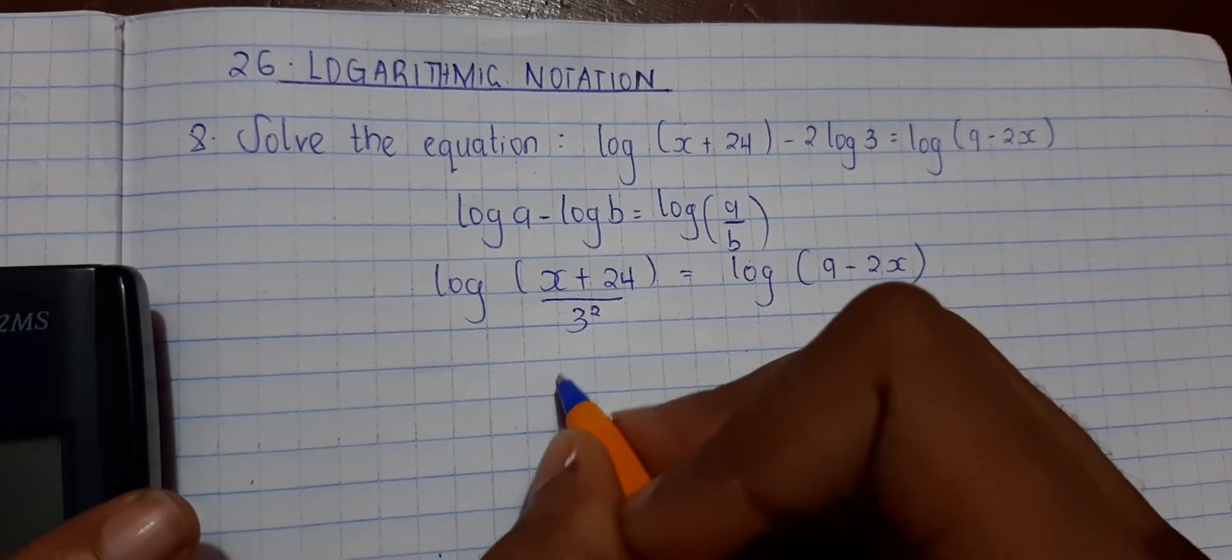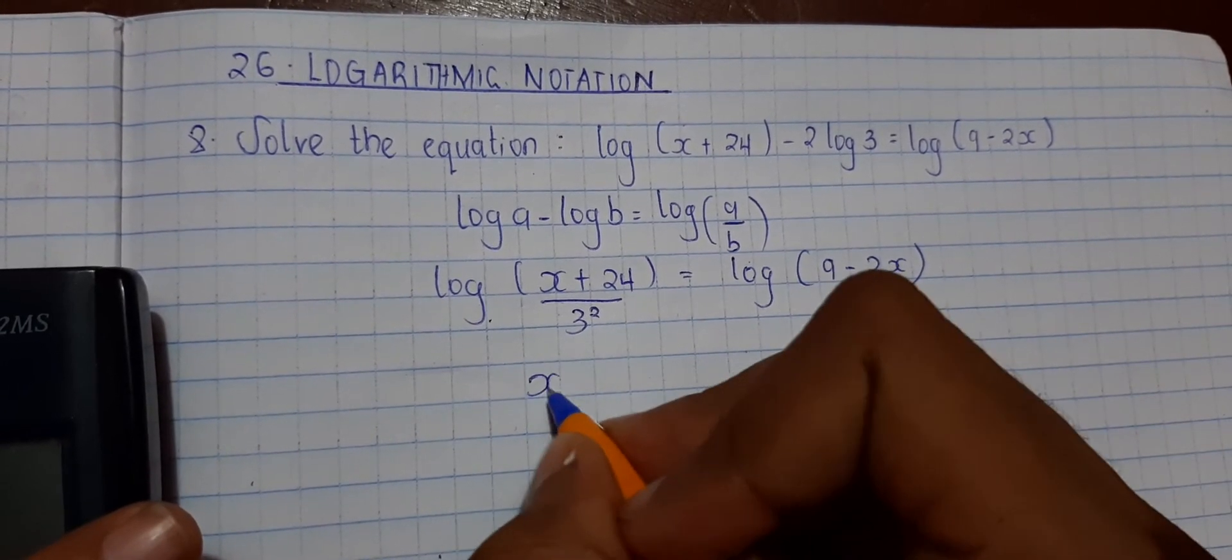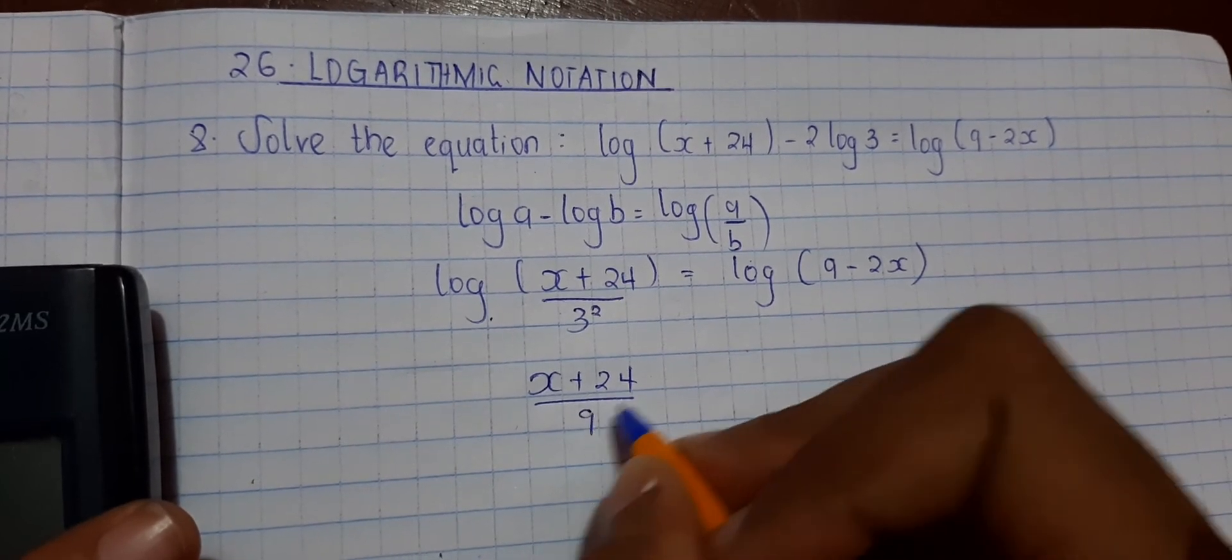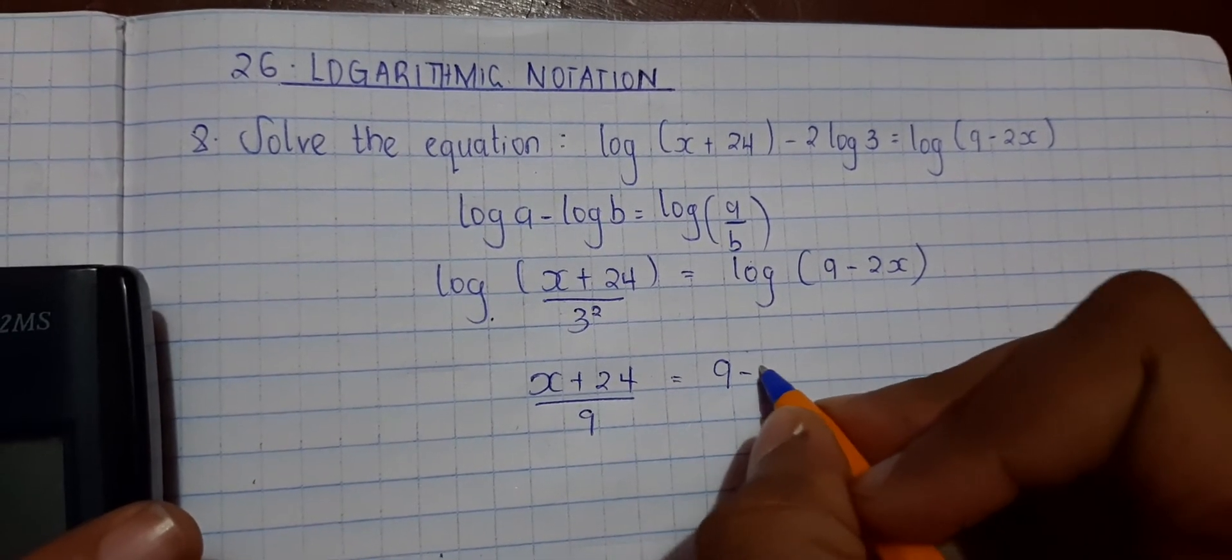So 3 squared is equals to 9. Log cancels out, so (x plus 24) over 9 is equals to 9 minus 2x.